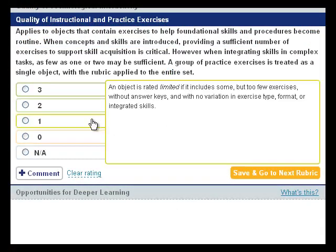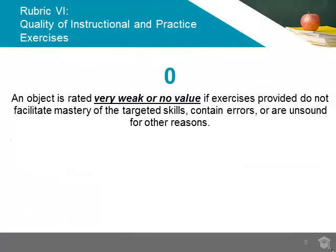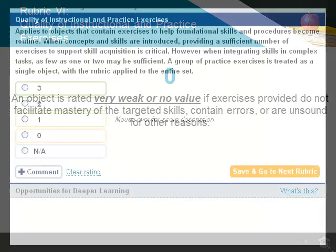An object is very weak or of no value if the exercises in the object contain errors, do not facilitate mastery of the intended skills, or are for other reasons unsound, and should receive a 0 rating.